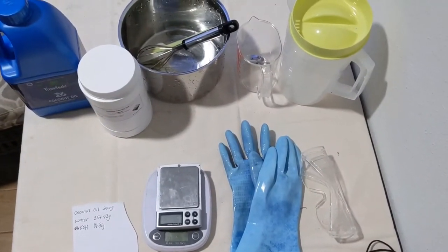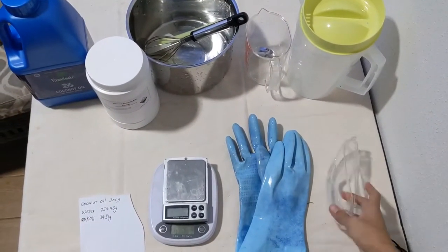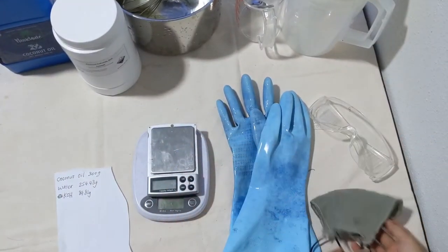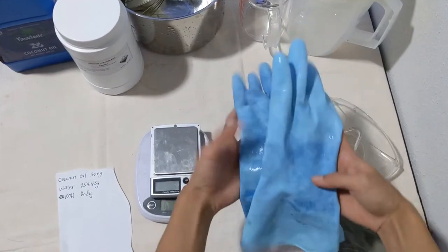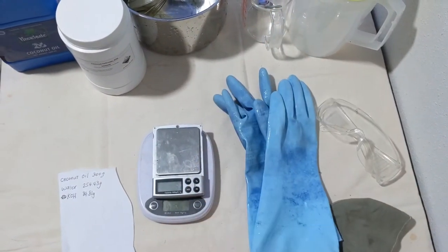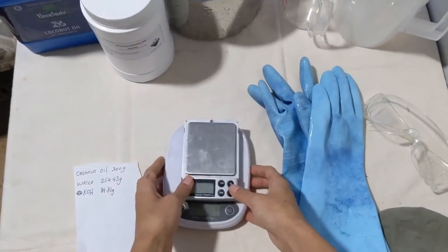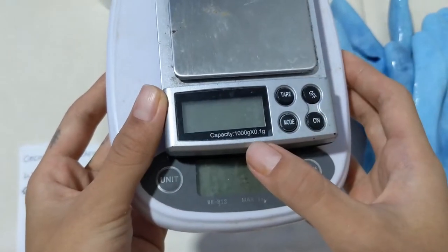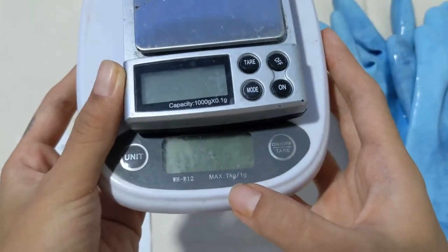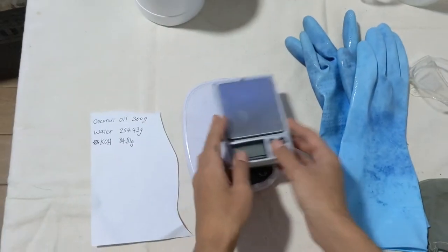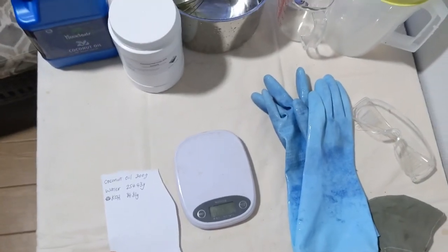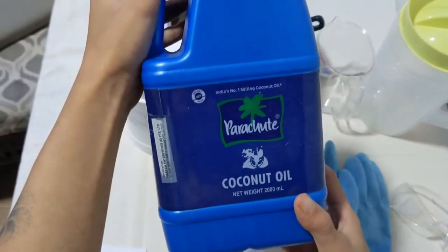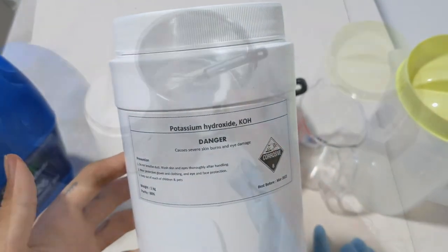The tools and materials you will be needing today are some safety gear such as goggles, a mask for the fumes, and some rubber gloves. Be sure to also wear some long sleeves. As for scales, you can use one with a 0.1 gram precision or one with one gram precision. Today, I'll be using the one with a one gram precision. Have your recipe nearby as well. Most importantly, you'll be needing some coconut oil and some potassium hydroxide.